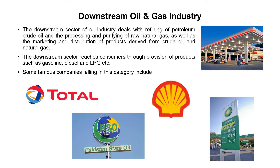Simply put, the downstream oil and gas industry deals with the end user or end consumer. The upstream sector produces oil and gas, the midstream sector transports it, and the downstream sector refines it and provides those oil and gas products to the end user — the general public.